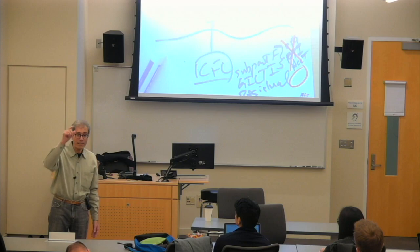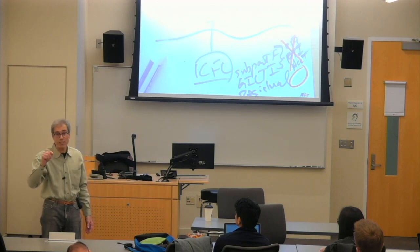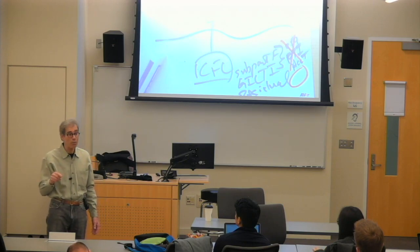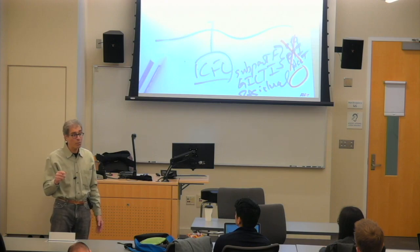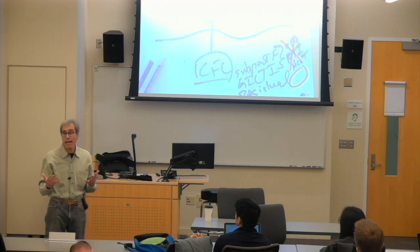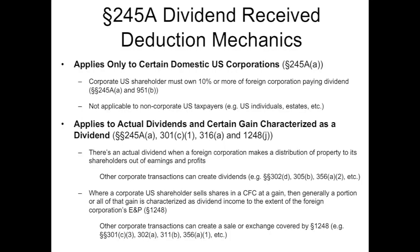Now, last time I checked, 75 minus 75 is zero. So, we have no further U.S. tax, no further U.S.